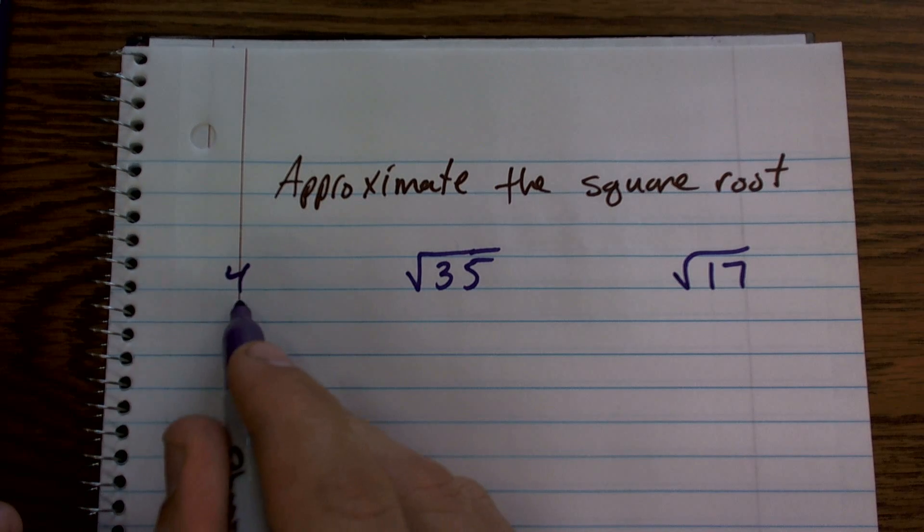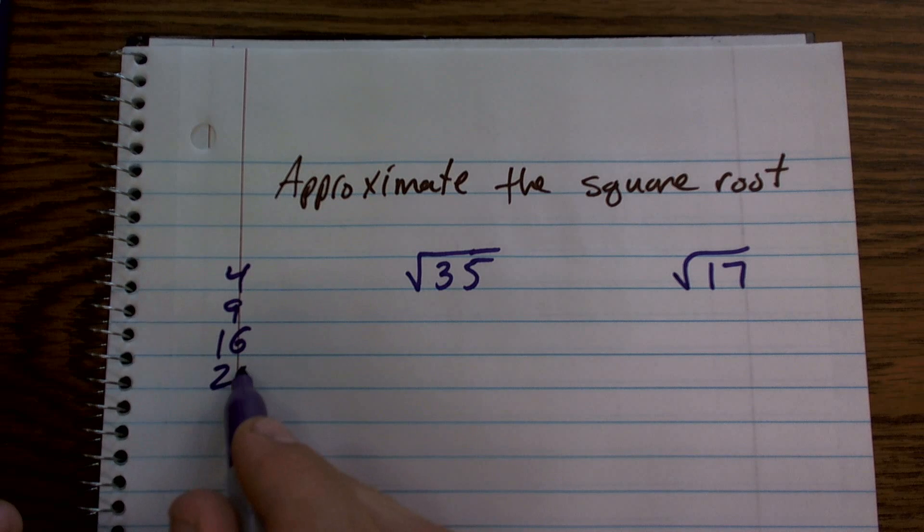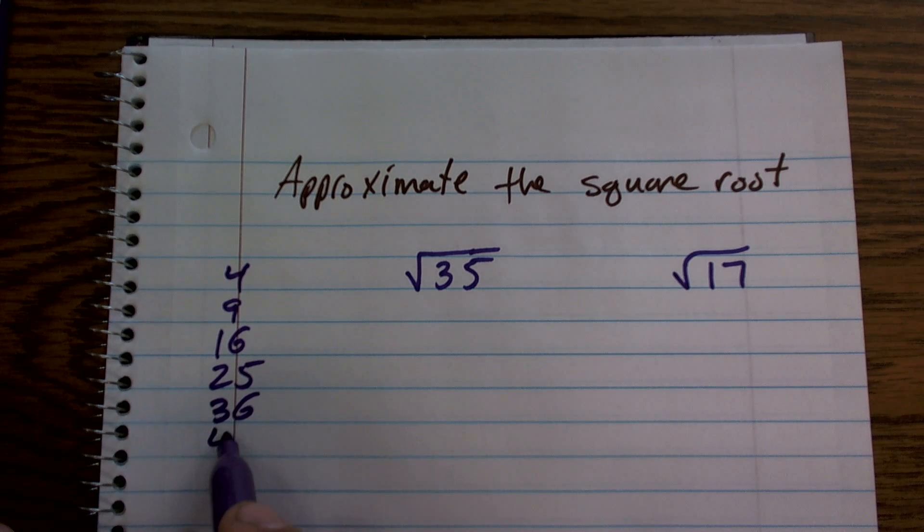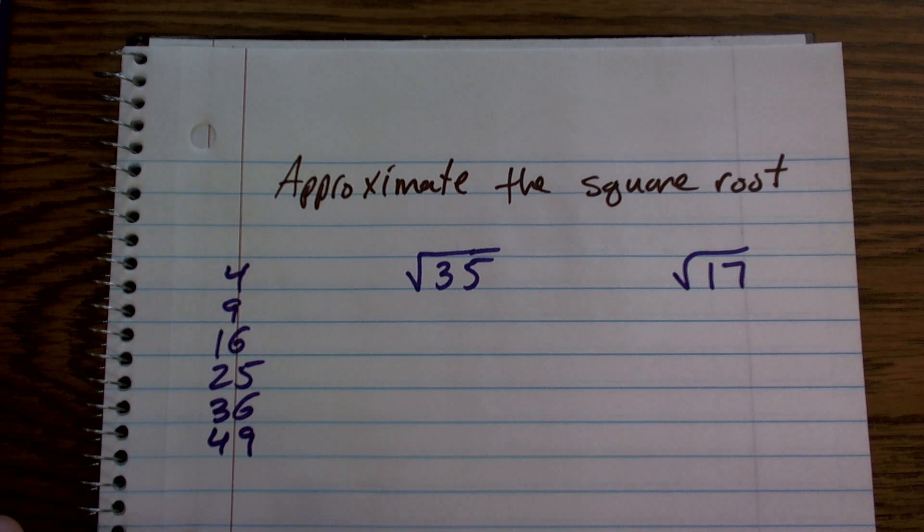2 times 2 is 4, 3 times 3 is 9, 4 times 4 is 16, 5 times 5 is 25, 6 times 6 is 36, 7 times 7 is 49, and on and on. You can keep on going.